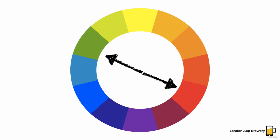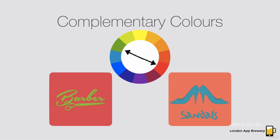The opposite of analogous colors is when you take one color on the color wheel and match it with the color that's directly opposite to it. This is called complementary colors. Complementary color palettes produce extremely clashy designs that stand out and grab your attention, and can be good for logo design or attention-grabbing screenshots, but they don't make very good color palettes for your main interface. You don't want to be staring at clashing colors all the time.